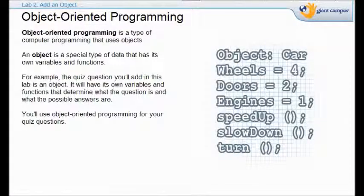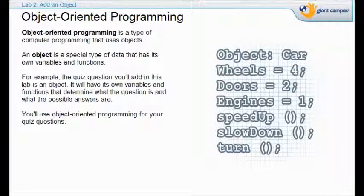What we're going to be dealing with in this particular project is what's called object-oriented programming. Those of you who are interested in game design or particular types of animation — if you're going to program with that — you're going to use a lot of object-oriented programming. It's really a great concept that will make your programming a lot easier. Old-fashioned methods meant pages upon pages of programming. But with object-oriented programming, you define an object. For example, here they have a car. They give it certain properties like wheels, doors, and engines, and certain functions like speed and turns.